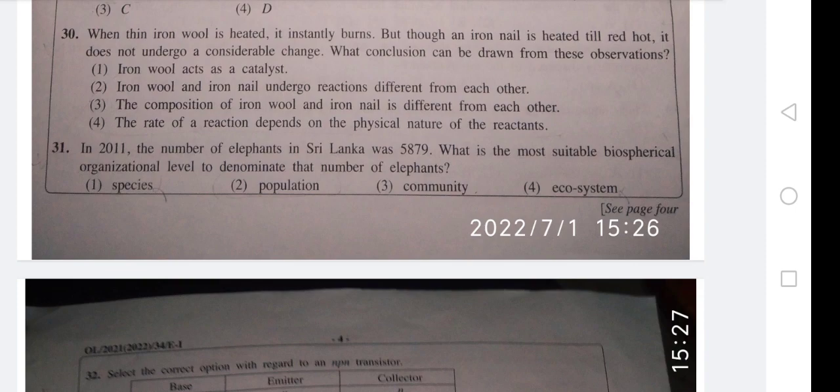The reason for this is the fourth one - the rate of reaction depends on the physical nature of the reactants. Now thin iron wool's surface area is larger, but an iron nail has less surface area. So physical nature of the reactant is dependent on the rate of reaction.